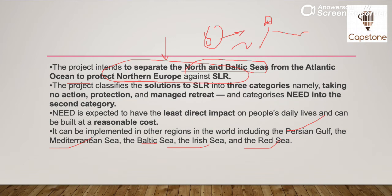Aur in dams ke banane ke jo impacts honge, woh logon ki life pe bahut kam impact hoga, aur ye dams reasonable cost pe ban sakenge, jo ki bahut important aspect hai climate change se ladne ke liye. Agar hum is project ki classification ki baat karein, is project classifies the solutions to sea level rise — jo sea level rise ke solutions hain, usko teen categories mein divide karta hai: pehla — taking no action; second — protection; and third — managed retreat. Aur is pure project ko — NEED ko — inhone protection, yaani ki second category mein categorize kiya hai.